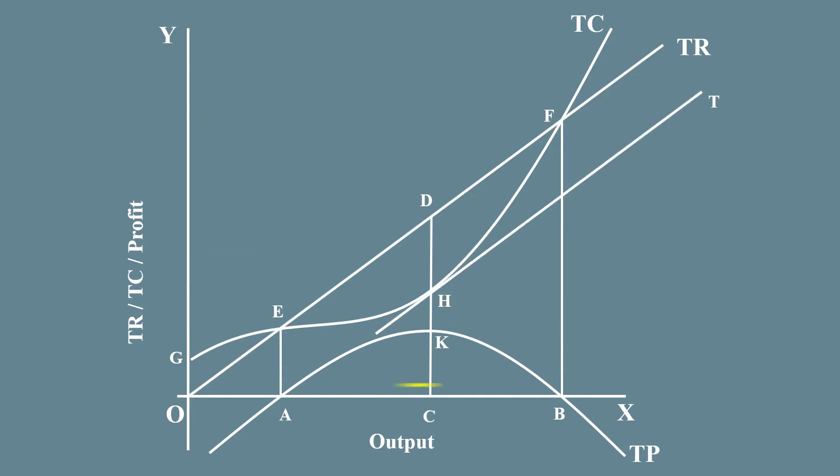In the range of output AB, profit is positive because total revenue is greater than total cost. When output is C units, profit is maximum because the difference between total revenue and total cost is maximum. The firm is in equilibrium when it produces C units. At this output, the firm's profit is maximum.